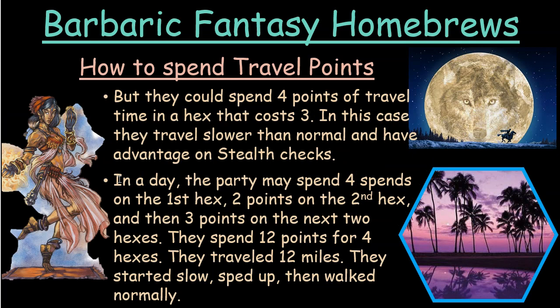A party that wants to go slow could spend four points in a hex that costs three — more than the normal cost — which means they're going slower than normal but gain advantage on stealth checks. And within a single day, they can vary their spending per hex: four points on the first hex going slow, then two points on the second to speed up, then three points on the next two. That's 12 points across four hexes — 12 miles total, with a flexible pace throughout the day.